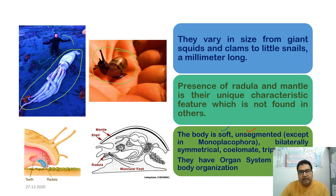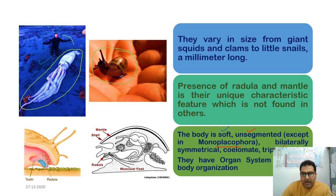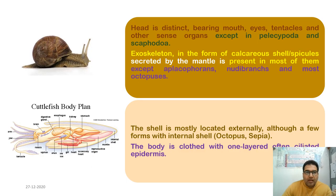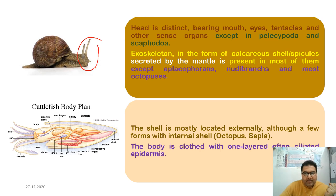Most mollusks are unsegmented, but a few such as Monoplacophorans are segmented. They are bilaterally symmetrical, coelomate, and triploblastic with an organ-grade system of organization. They have a distinct head bearing eyes, mouth, tentacles, and sensory organs — except in the case of Pelecypoda and Scaphopoda.